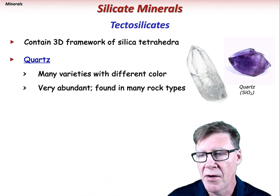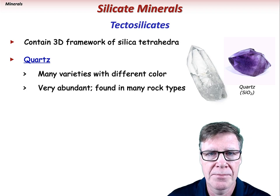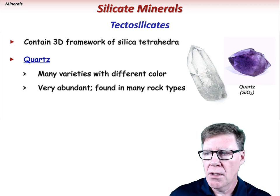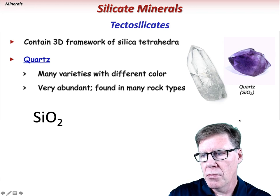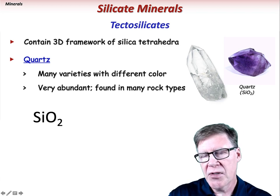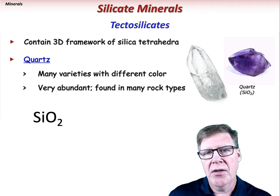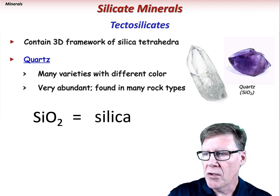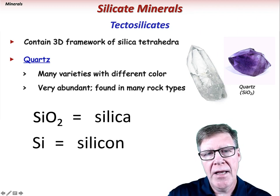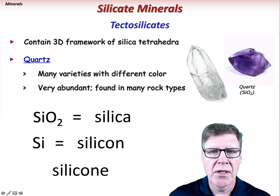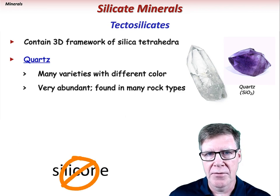Quartz is a very abundant mineral found in many types of rocks. Compositionally, SiO2 is called silica — a chemist might call it silicon dioxide. The element Si is silicon. Silicone is something else that isn't geologic in nature.